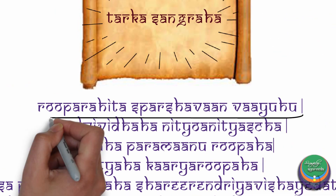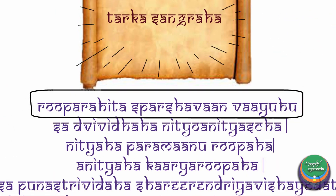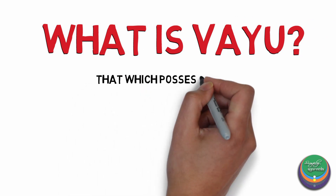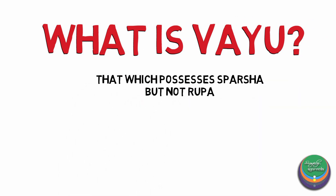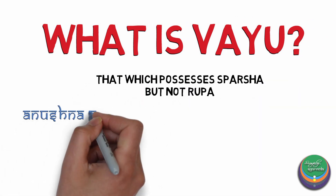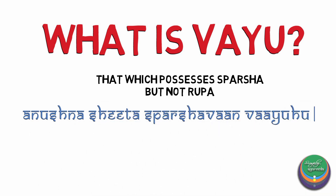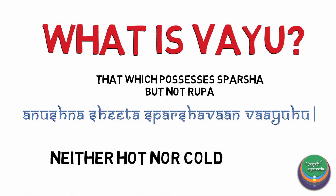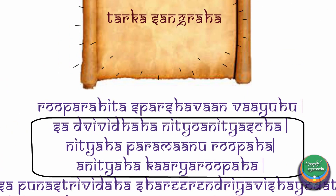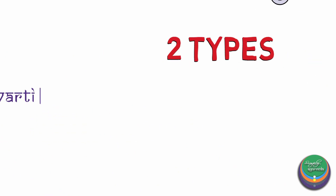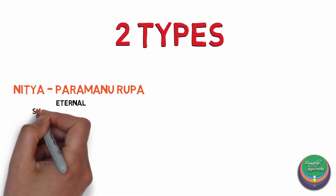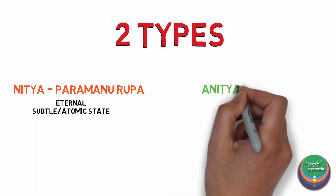What is Vayu? It is Rupa Rahita Sparashavaan — that is, it is that which possesses parsha or touch but not rupa or visual form. Its parsha is explained as Anushna Shita Sparashavaan Vayuhu. It is of two types: Nithya Rupa or eternal form, which is subtle and existent in an atomic state, and Anithya Rupa or perishable form, which is in a functional state.